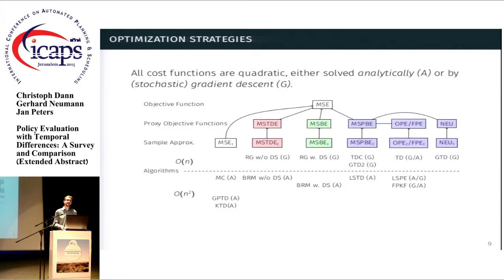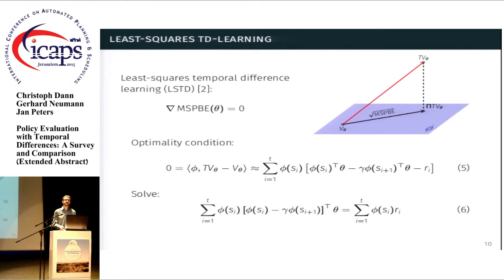So let's quickly look at one specific example of an algorithm. Let's look at least squares temporal difference learning, LSTD for short, which basically minimizes the mean squared projected Bellman error by setting its gradient to zero. One can easily derive the solution of this in a few steps of basic linear algebra. But to get some more intuition, let's look at the geometrical interpretation of this.